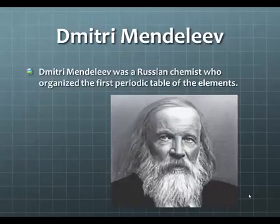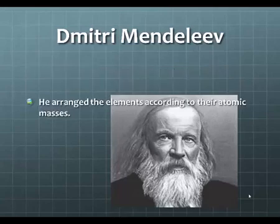So, Dmitry Mendeleev. He was a Russian chemist. He organized the very first periodic table of the elements. He arranged the elements according to their atomic masses. He looked at different types of elements, measured their masses, and then put them in order based on increasing mass.